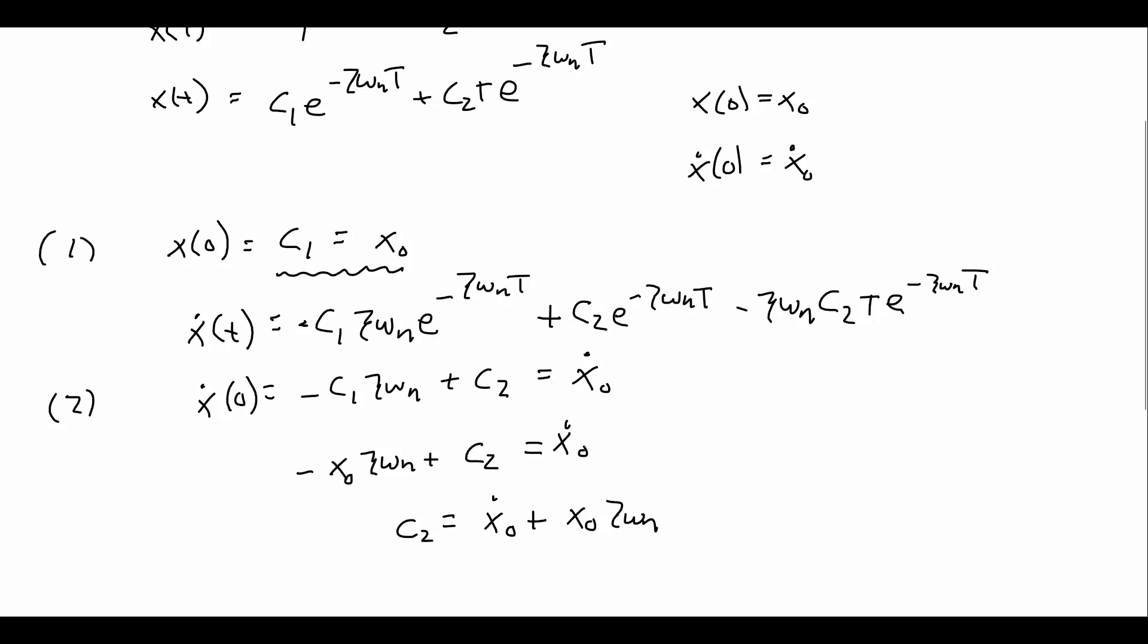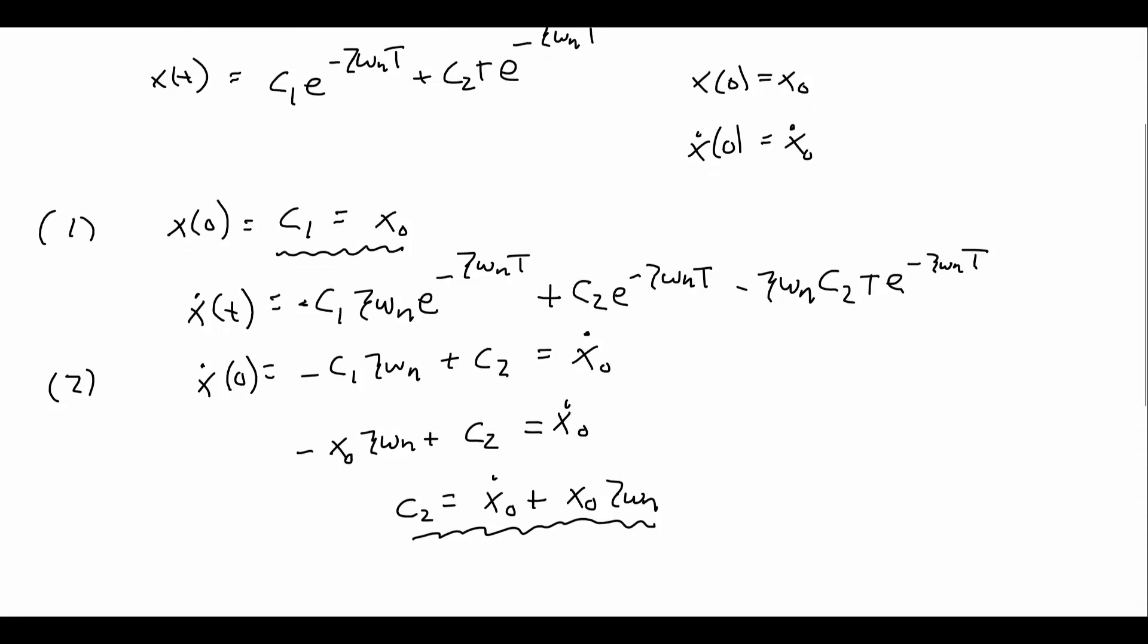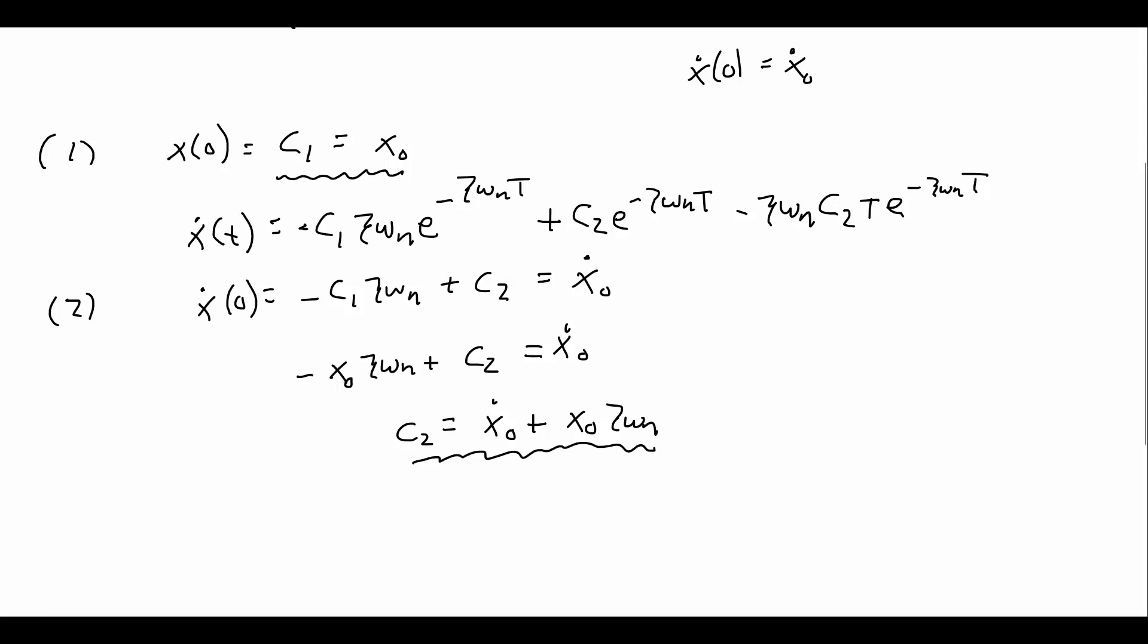Now we can put the c₁ and the c₂ back into our expression for x(t) and find our solution. So x(t) equals, c₁, that's just x₀, e^(-ζωₙt), plus c₂ times t times e^(-ζωₙt).